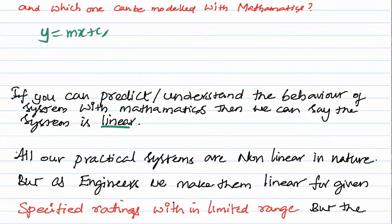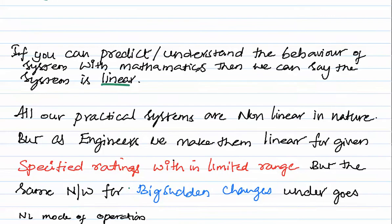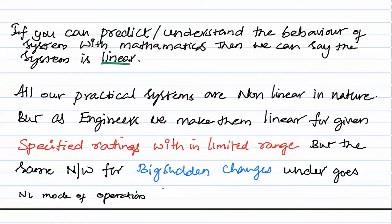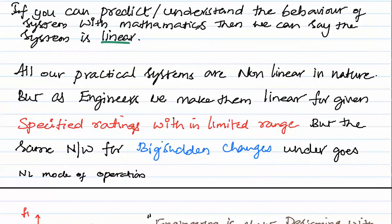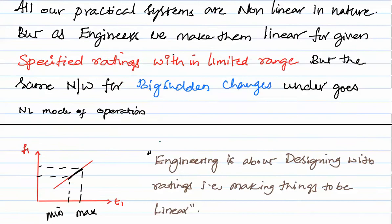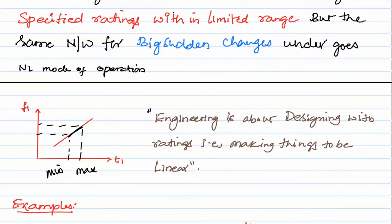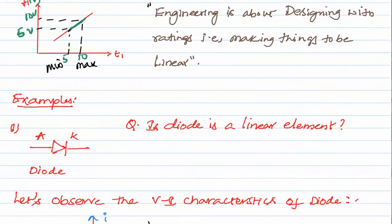All our practical systems are non-linear in nature, but as engineers we make them linear for a given specified rating within a limited range. The same network for big sudden changes undergoes non-linear mode of operation. For example, we have 5 volts at 5 seconds and 10 volts at 10 seconds — within this range we can model it as a linear one. Engineering is about designing with ratings that make things linear.